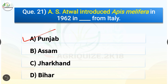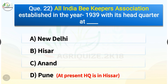Question number twenty-two: All India Beekeepers Association was established in the year 1939 with its headquarters at which location? The options are: New Delhi, Hisar, Anand, or Pune. The correct answer is option D — Pune. All India Beekeepers Association was established in the year 1939 with its headquarters at Pune. At present the headquarter is in Hisar.